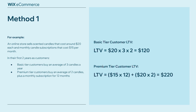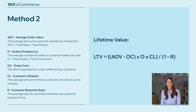At this point, you're probably saying there are things not being accounted for — my customer might be spending that money, but that's not what I'm actually earning because I have fulfillment costs, plus I don't retain all of my customers. You're absolutely right. So let's move on to method two, which does account for those variables.